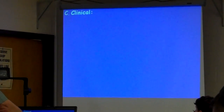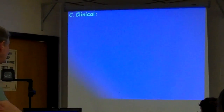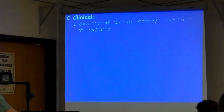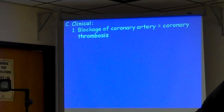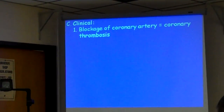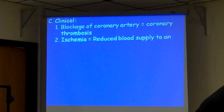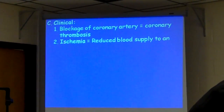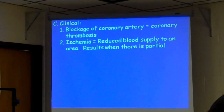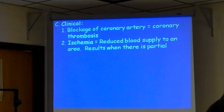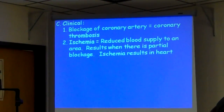Now, clinical stuff. Blockage of a coronary artery is called a coronary thrombosis — don't forget that. Ischemia is reduced blood supply to an area, and it results when there is partial blockage. Ischemia means the heart muscle is not getting enough oxygen.